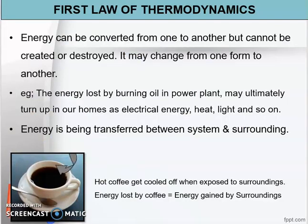Now let's look at the first law of thermodynamics. The first law states that energy can be converted from one form to another but cannot be created or destroyed. We have several types of energy: kinetic energy, thermal energy, solar energy, electrical energy, and so on. This kind of energy cannot be created or destroyed — it can only be changed from one form to another. For example, the energy released by burning oil in a power plant may ultimately turn up in our homes as electrical energy, heat, light, and so on.